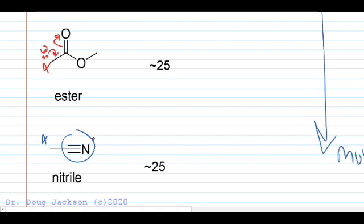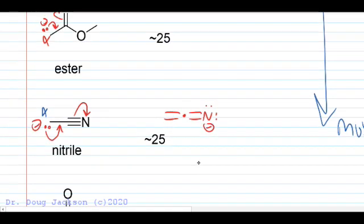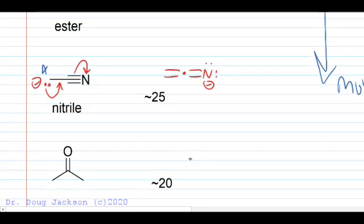The reason the nitrile is about the same acidity as the ester is because nitrogen is more electronegative than carbon, so it accepts that lone pair more readily. The alpha carbanion form is on one side, the stabilized enolate-analogous form on the other — and the alpha carbanion is still the nucleophilic side.